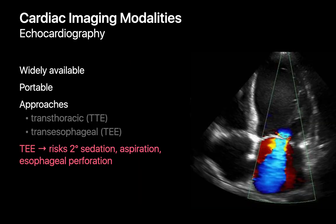Echocardiography is much more widely available than cardiac CT and can be performed at a patient's bedside. Transthoracic echo is performed with an ultrasound probe on the patient's skin surface, while transesophageal echo is performed with an ultrasound probe within the esophageal lumen. Transesophageal echo can offer better image quality than transthoracic echo, though it's associated with risks that come with imaging a patient with an esophageal ultrasound probe, namely risks associated with sedation, aspiration, and esophageal perforation.